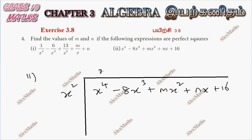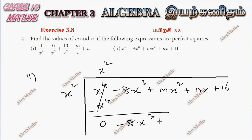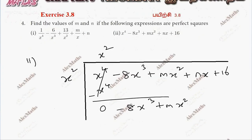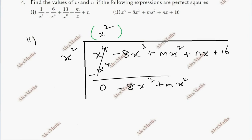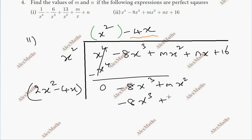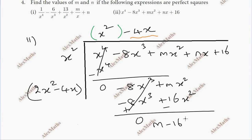So x square times x square equals x⁴. Subtraction is equal to sign change. Cancel equals 0 — next term copy. So the first term gives minus 8x³ plus 16x², and subtracting gives m minus 16 x square as the balance remainder.